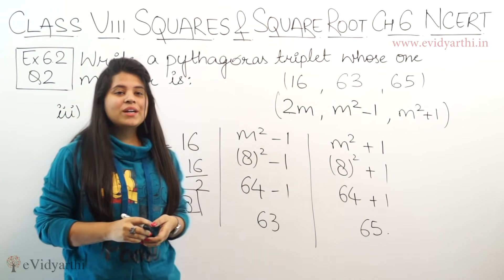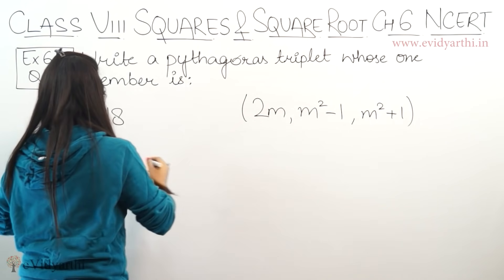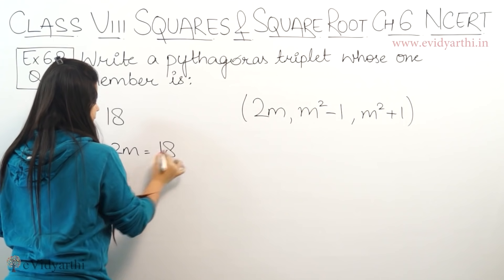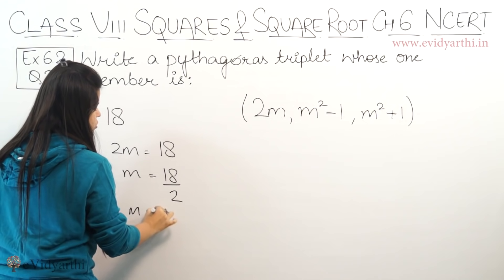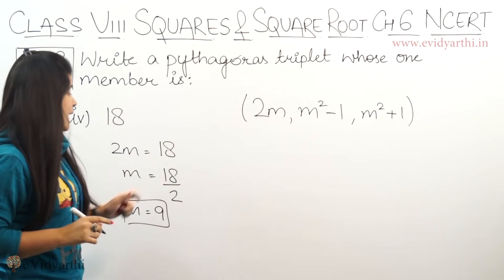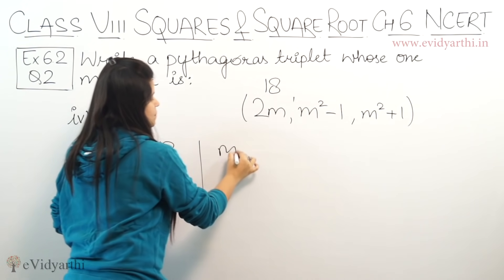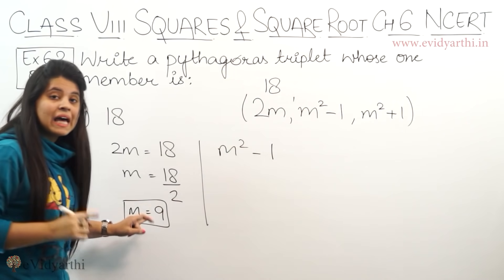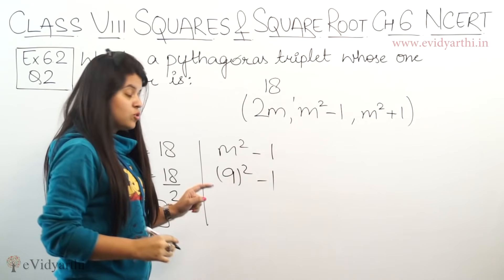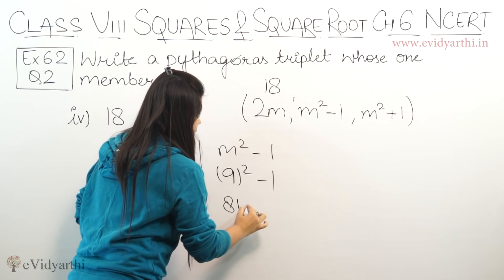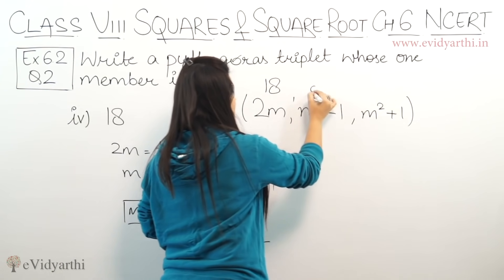This was part number 3. Now let's come to the next part. The fourth part is 18. So 2m equals 18, which means m equals 18 upon 2, so m equals 9. The first number is 18. Now let's find the second number: m² - 1, so 9² - 1. 9² is 81, minus 1 will be 80. The second number is 80.